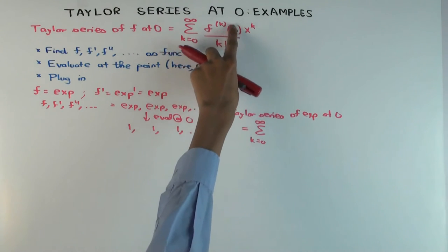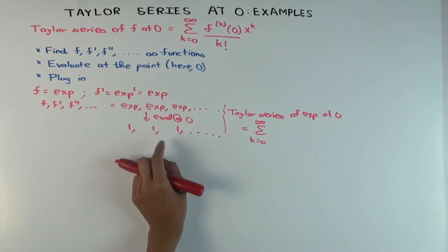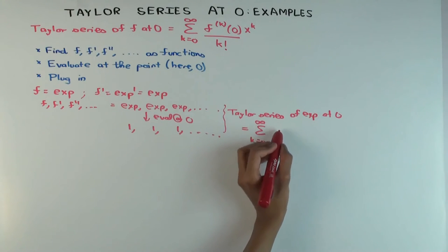It's summation k equals zero to infinity. We already calculated that all these f^(k)(0) are one. So you just put one there. So you'll just get x^k over k factorial.